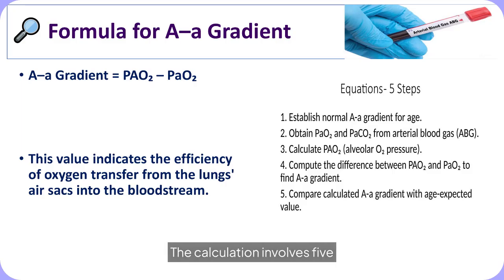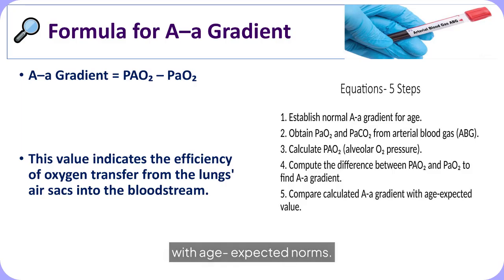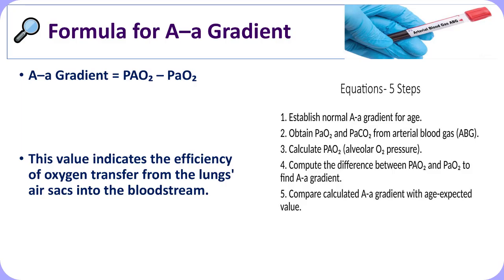To interpret the AA gradient, you first determine the normal expected value based on age, then obtain arterial oxygen and carbon dioxide levels from an arterial blood gas sample. Use these values to compute alveolar oxygen pressure, then subtract the arterial oxygen pressure from the alveolar oxygen pressure to find the gradient.